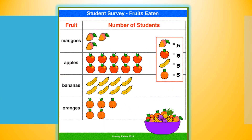We're going to begin by counting the group of mangoes. Can you remember how to count in fives? Let's go. Five, ten, fifteen. That means the group of students have eaten 15 mangoes.